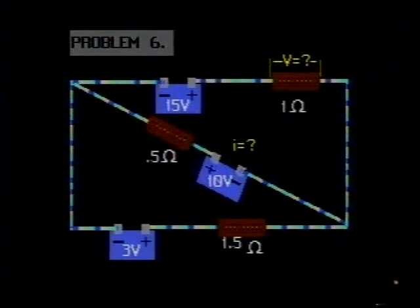Looking at our circuit, we have a 15-volt battery in this branch, a 10-volt battery in this branch, and a 3-volt battery in this branch, a 1.5-ohm resistor, a 0.5-ohm resistor, a 1-ohm resistor. The problem is to find the current through this 10-volt battery and the voltage drop across this 1-ohm resistor. Try to solve that problem now before watching its solution.